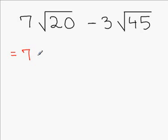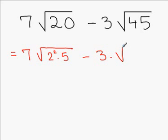For instance, square root 20 is square root 4 times 5. But 4 is 2 to the second power. So, 20 is 2 squared times 5 minus 3 times. Now, let's rewrite 45. 45 is 9 times 5. But 9 is 3 squared. So, 45 can be written as 3 to the second power times 5.